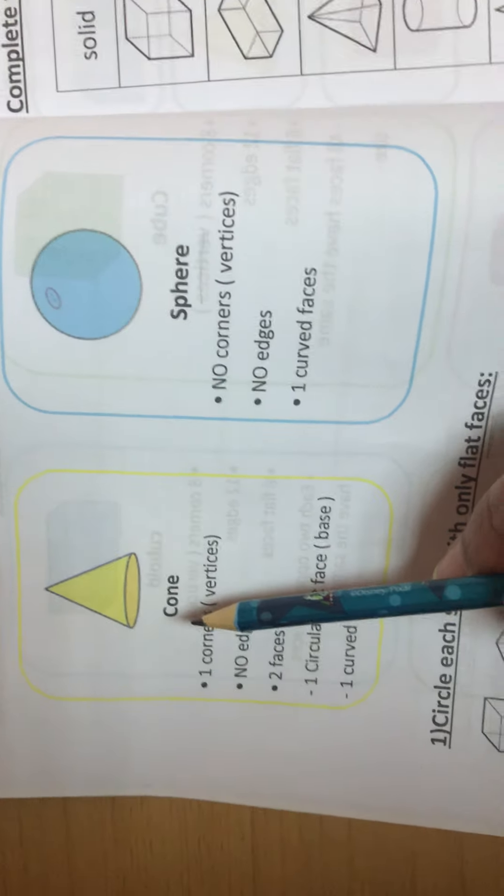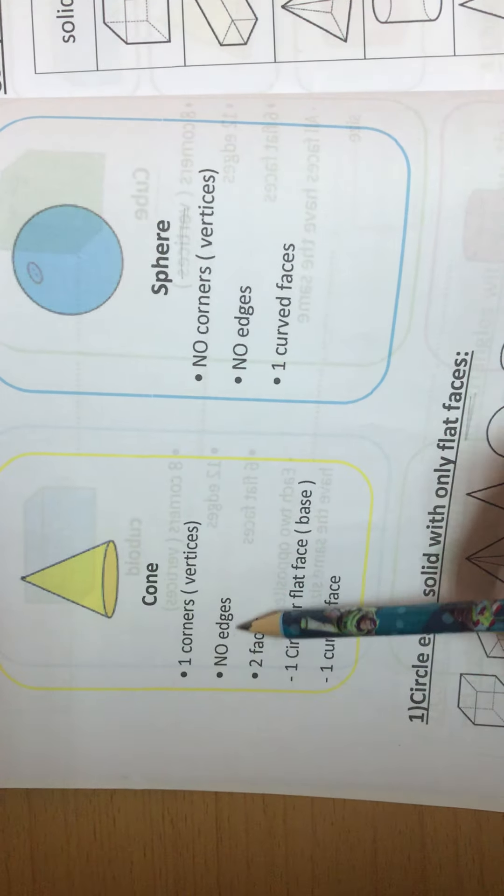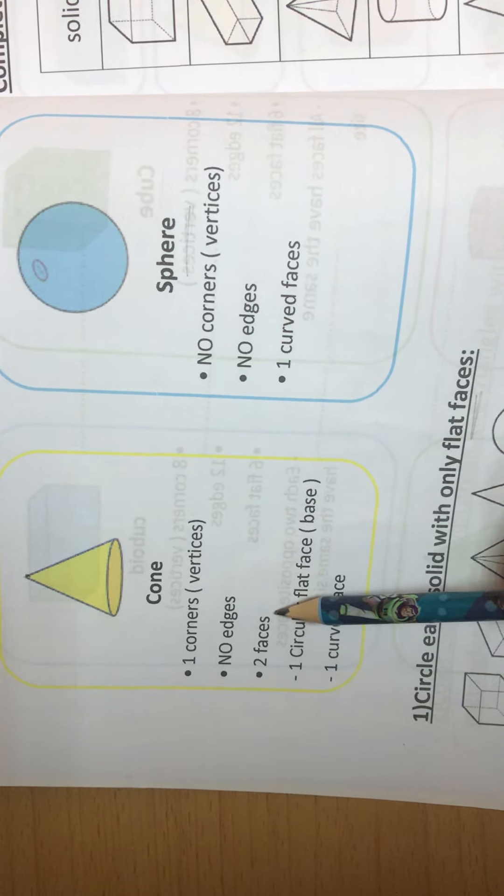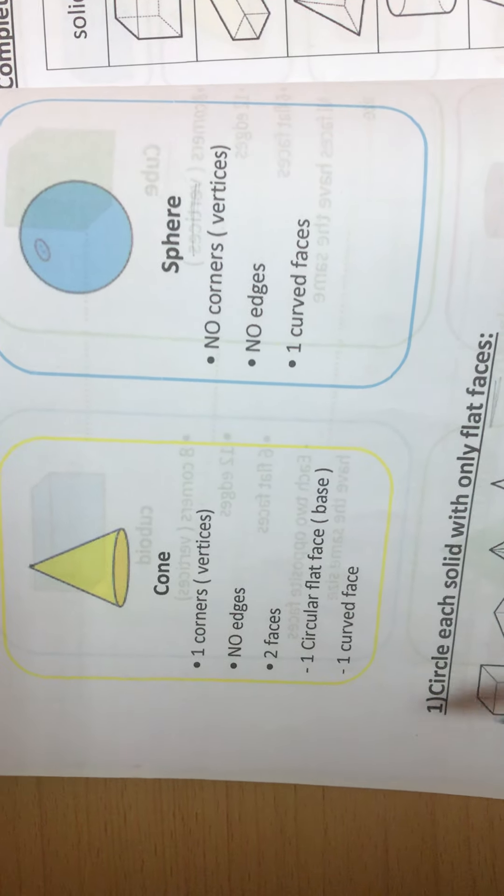Cone. Has 1 corner or vertex, no edges, 2 faces: 1 circular flat face (base) and 1 curved face.